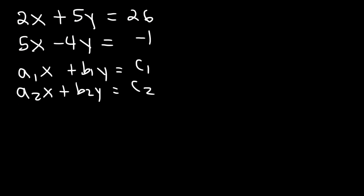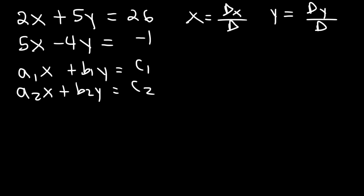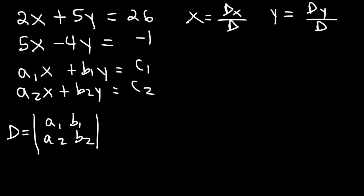In order to calculate x and y, x equals dx over d and y equals dy over d, where d is the determinant. Let's calculate d first. D is the 2x2 determinant of a1, b1, a2, b2. To calculate the 2x2 determinant it's going to be a1 times b2 minus b1 times a2.